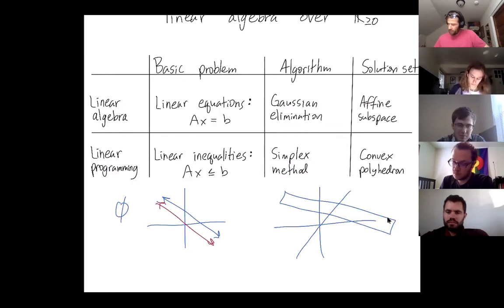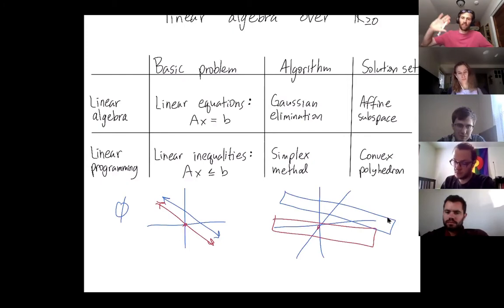But an affine subspace, affine just means that it doesn't need to go through the origin. So it could be translated to not go through the origin.